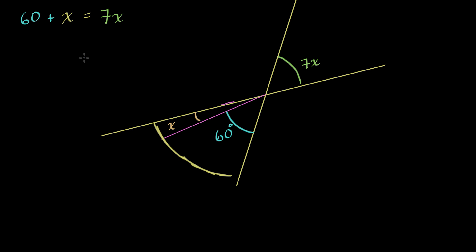And now we just have to solve for x. The simplest thing to do would be to get all of our x's on one side of the equation. I've already gotten 7x on this right-hand side. So let's get rid of all of the x's on the left-hand side.